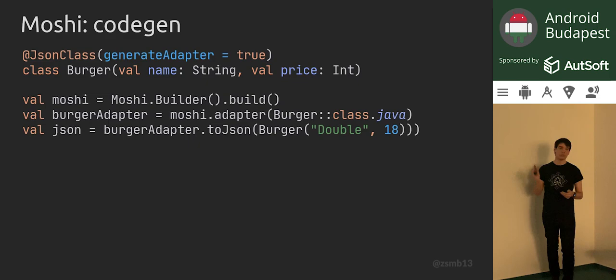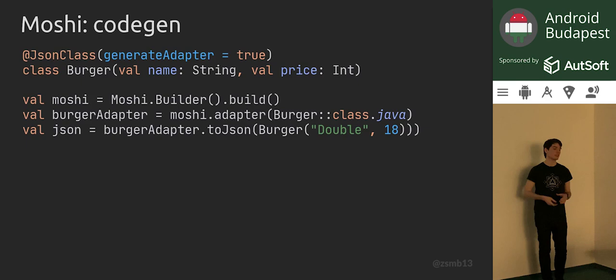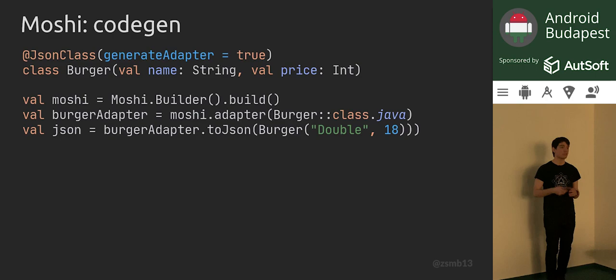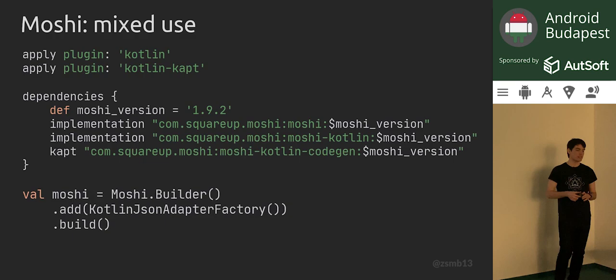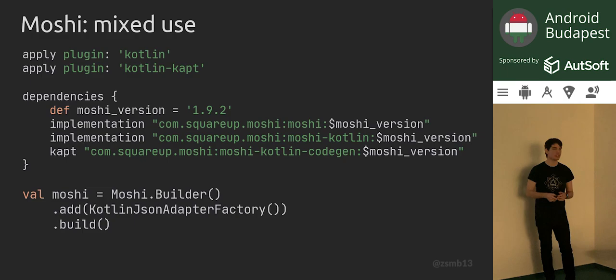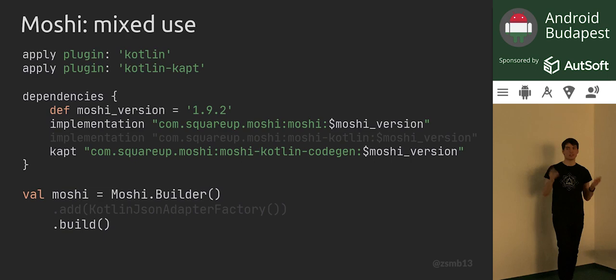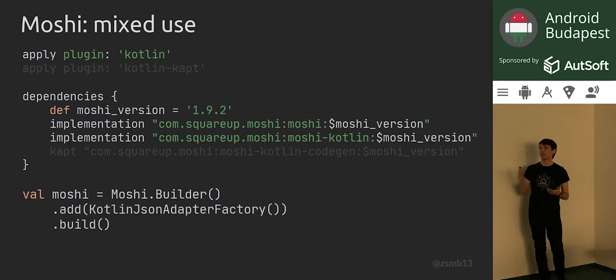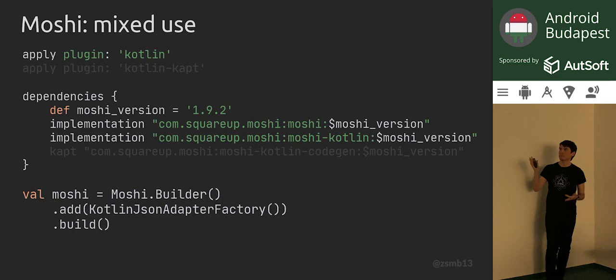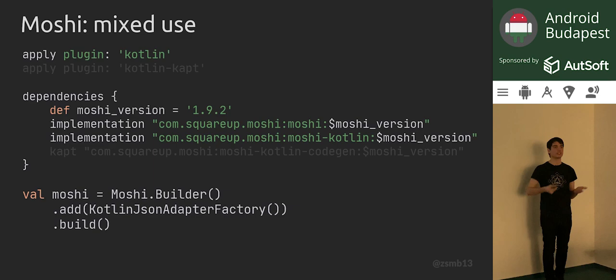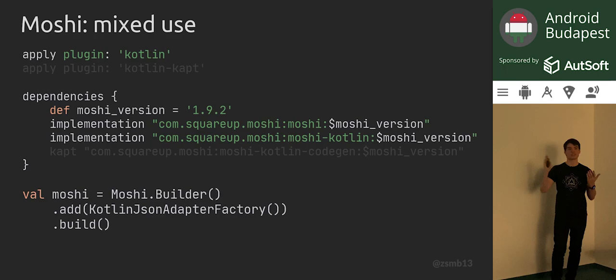With this annotation, Moshi will generate an adapter for you, which you don't even have to add to the Moshi builder yourself — it will find all generated adapters on its own at runtime. Those are the two setups for Moshi with Kotlin: reflection-based and code-gen-based. You can actually use both together in the same module — for classes annotated for code generation, the generated adapters are used; for anything else, Moshi falls back on the reflection-based approach.